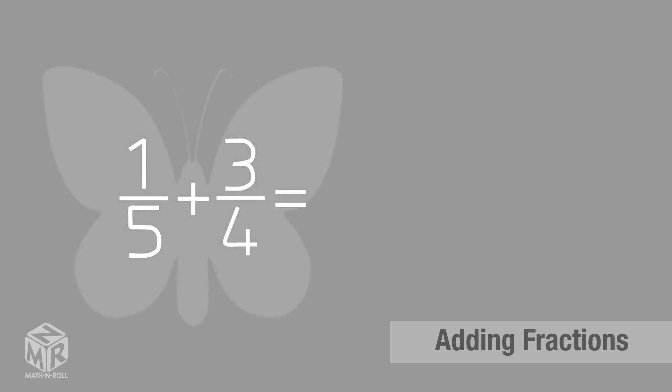Let's draw the wings of our butterfly by outlining the numerator of one fraction and the denominator of another fraction. We do this two times for both fractions. We give each wing an antenna.